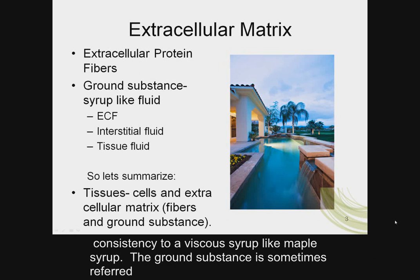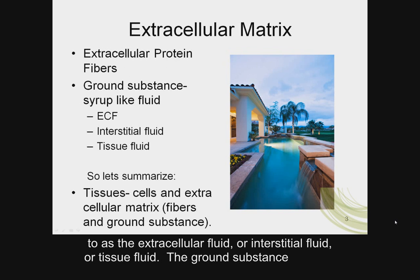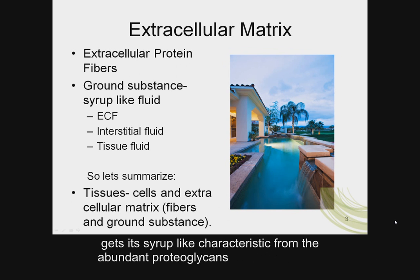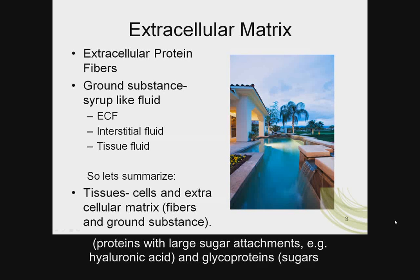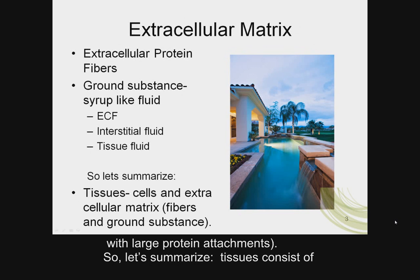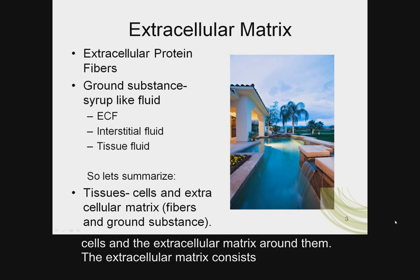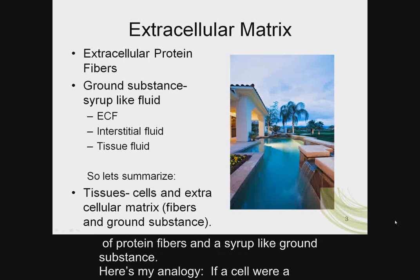The ground substance is sometimes referred to as extracellular fluid, interstitial fluid, or tissue fluid. It gets its syrup-like characteristic from the abundant proteoglycans — proteins with large sugar attachments, such as hyaluronic acid. There are also glycoproteins, which are sugars with large protein attachments. In summary, tissues consist of cells and the extracellular matrix around them, and the extracellular matrix consists of protein fibers and a syrup-like ground substance.